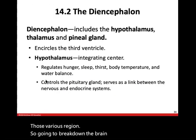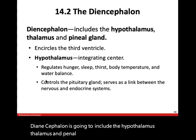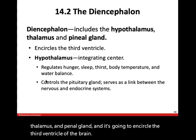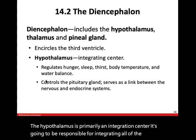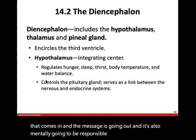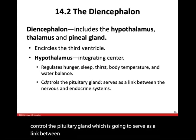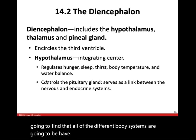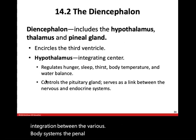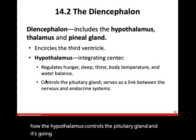The diencephalon includes the hypothalamus, thalamus, and pineal gland, and encircles the third ventricle of the brain. The hypothalamus is primarily an integration center — responsible for integrating input and regulating hunger, sleep, thirst, body temperature, and water balance. It controls the pituitary gland, serving as a link between the nervous and endocrine systems. The pineal gland is that bridge between our nervous system and our endocrine system.